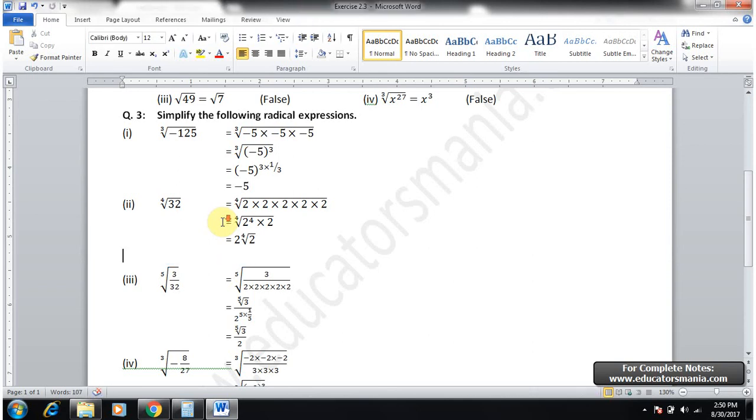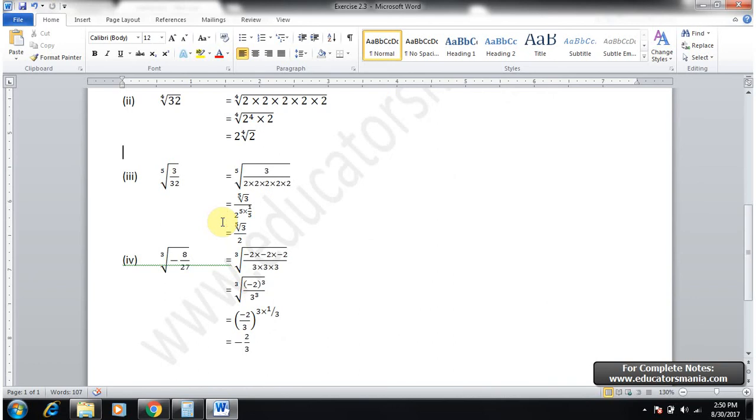Third part is fifth root of three by thirty-two. Fifth root of three by thirty-two. We will write thirty-two as five times two, five times two. Radical sign one over five, five and five cancel, two will go up, fifth root of three.